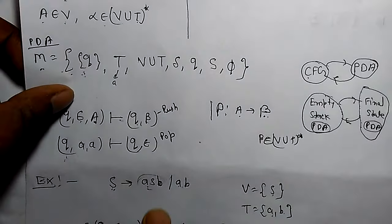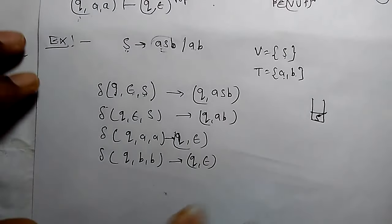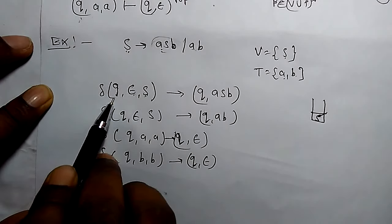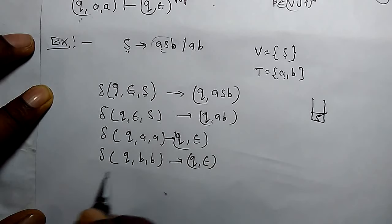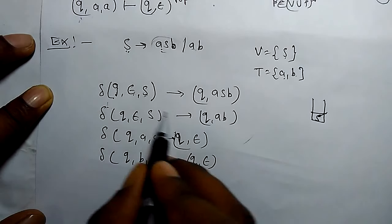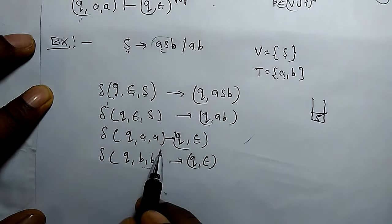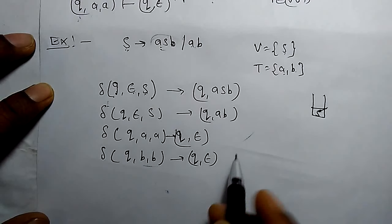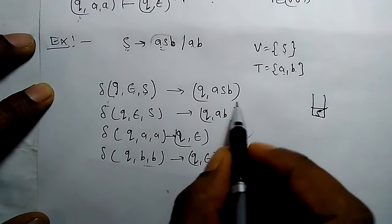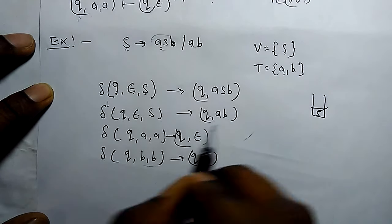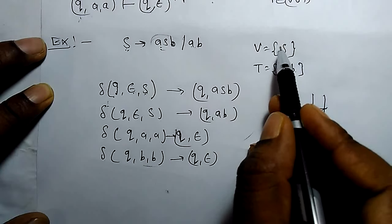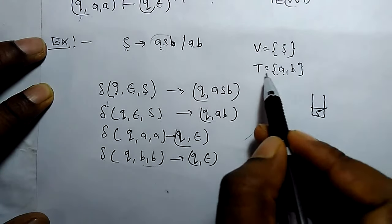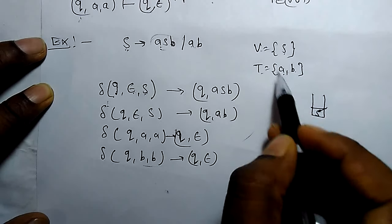For PDA we have seen there are seven tuples total. Q is the state. The transition values are of this type. A and B are the terminals. Tau is V union T. S is the variable, and D is the start symbol. So we can find the V union T.